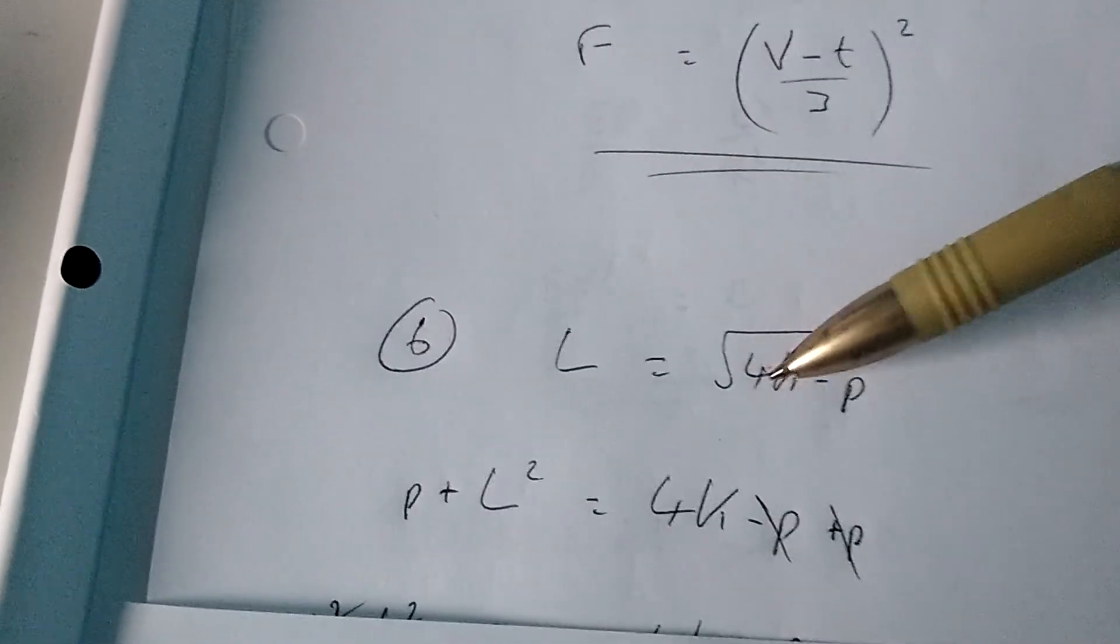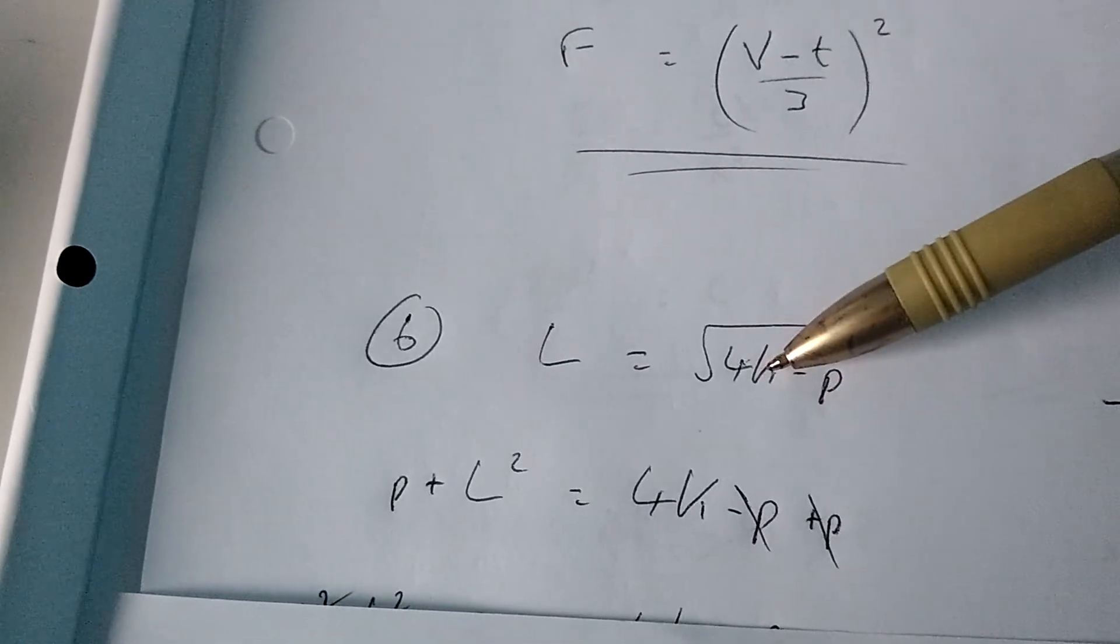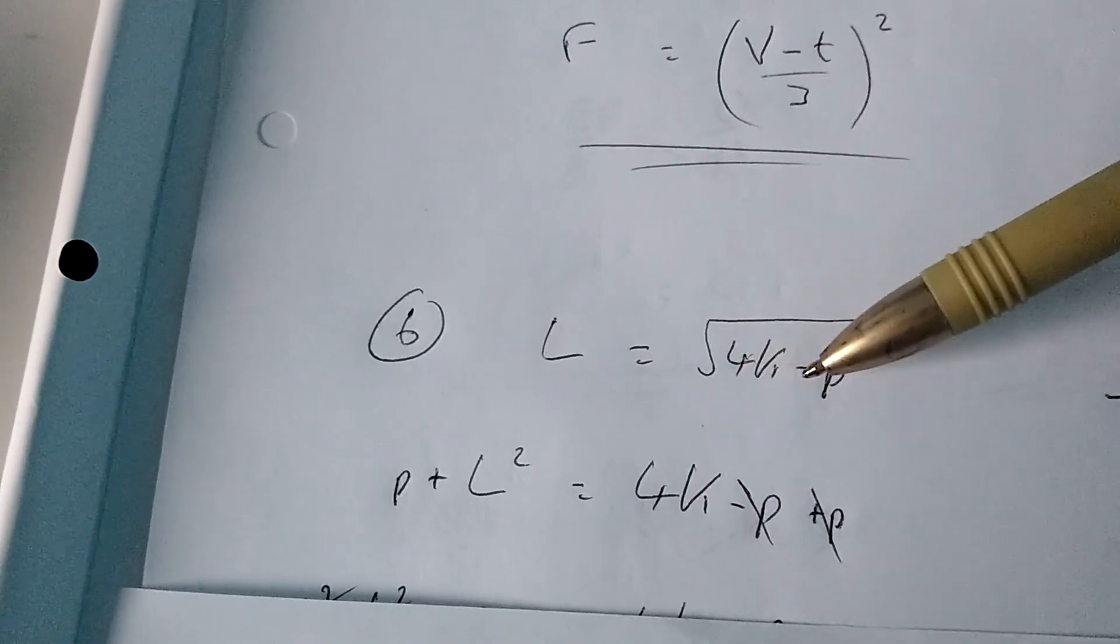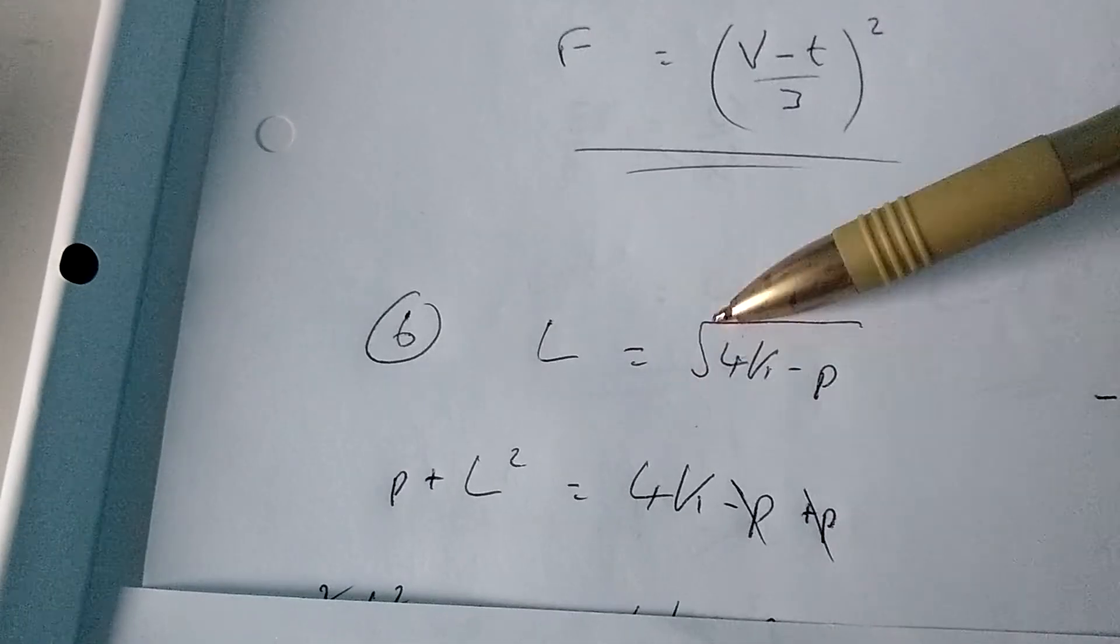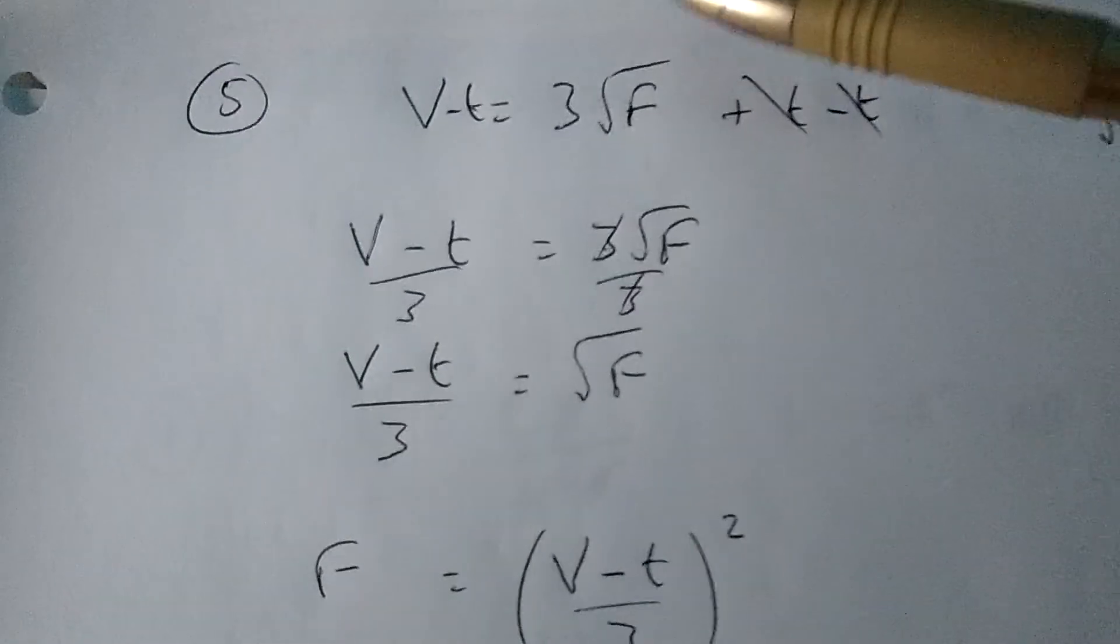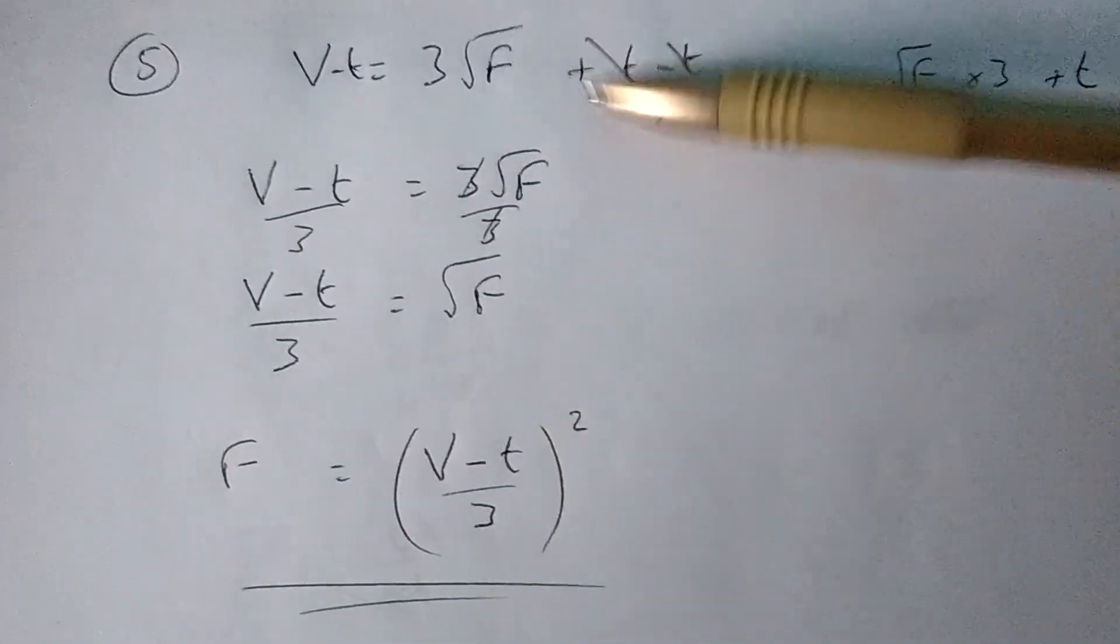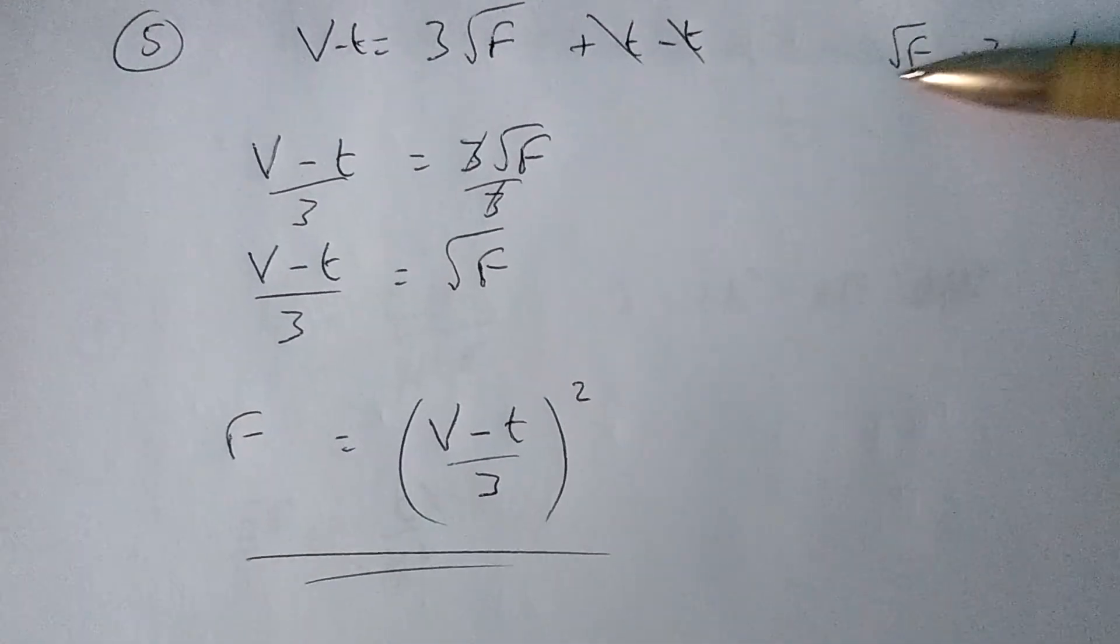On this one, we're square rooting all of 4k minus p. So I needed to do k multiplied by 4 minus p to get all of this before square rooting, which is why the square root is the last thing we've done. On this one, we're square rooting f, then multiplying by 3, then adding on t, which is why the square root was at the front.